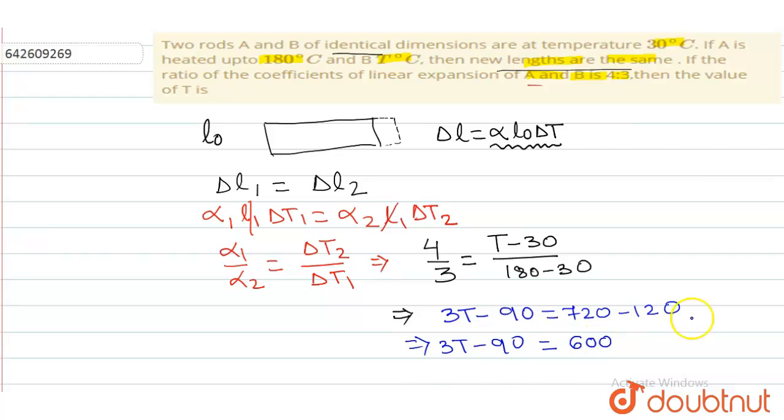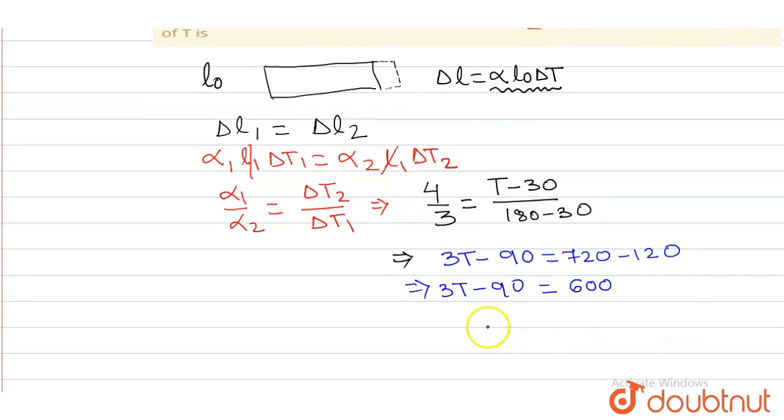This is 3T minus 90 is equal to 600. It goes to the other side and gets added, so 3T is 690. So the value of T is 690 by 3, that is 230 degrees.